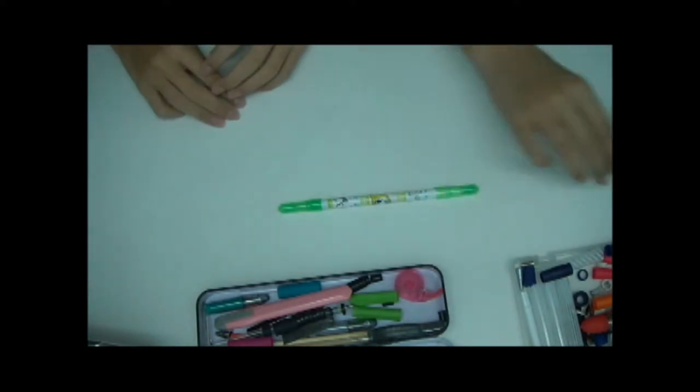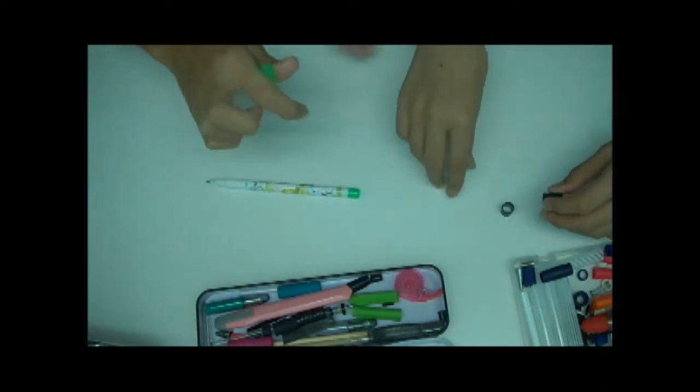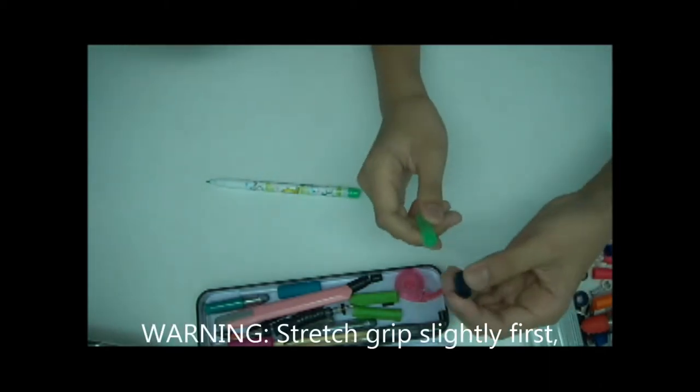So the second step would be to take your two cut grips and just stick them onto each cap, the end of each cap, like so.